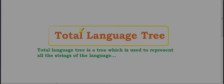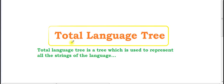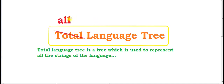Now let's move to our topic. In this lecture we're going to learn about the total language tree. A tree which is used to represent all the strings of a language is known as a total language tree. If we replace 'total' with 'all', then its definition becomes: a tree which is used to represent all the strings of a language.